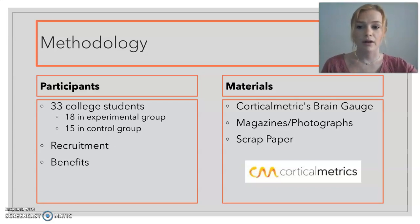So starting out, I recruited my participants through the psychology classes that were being offered. They were offered extra credit to participate, which always helps with college students. But I ended up getting 33 college students to participate in my study. 18 of them were in my experimental group and 15 were in my control group.